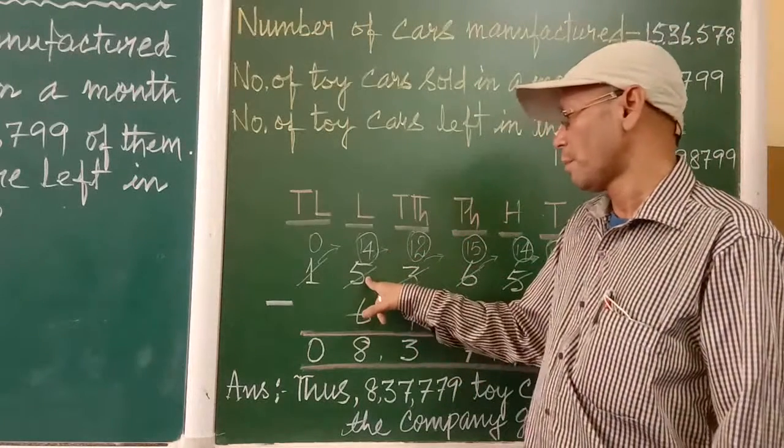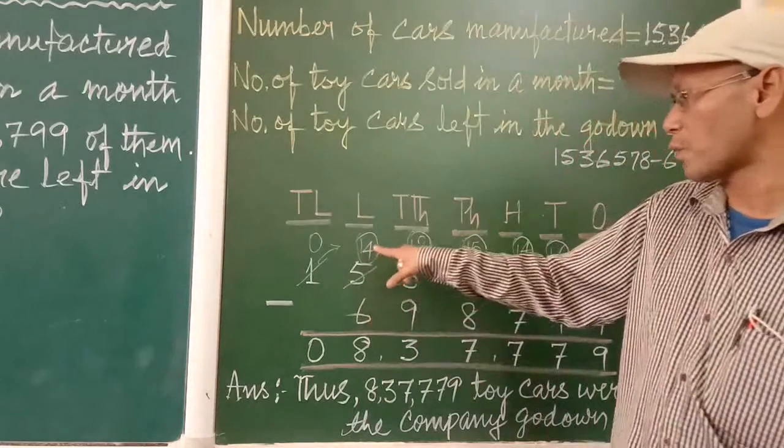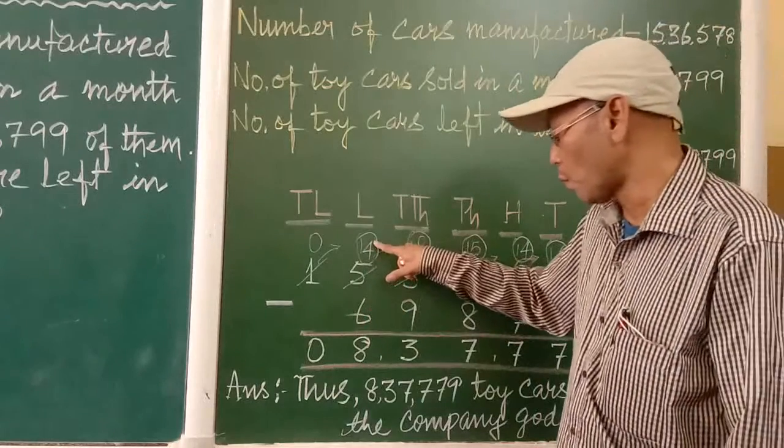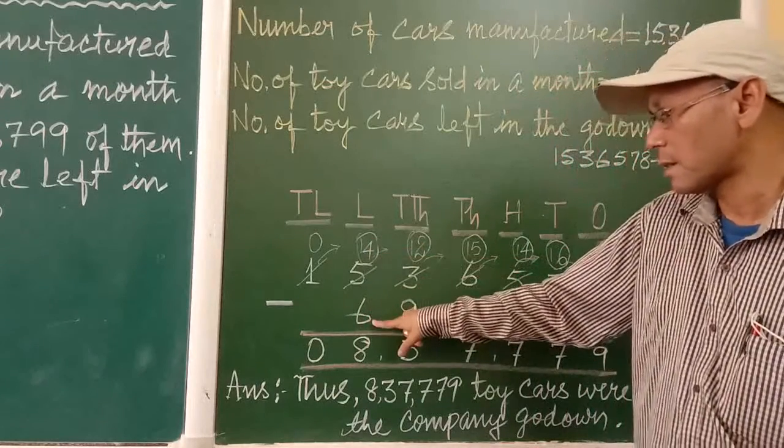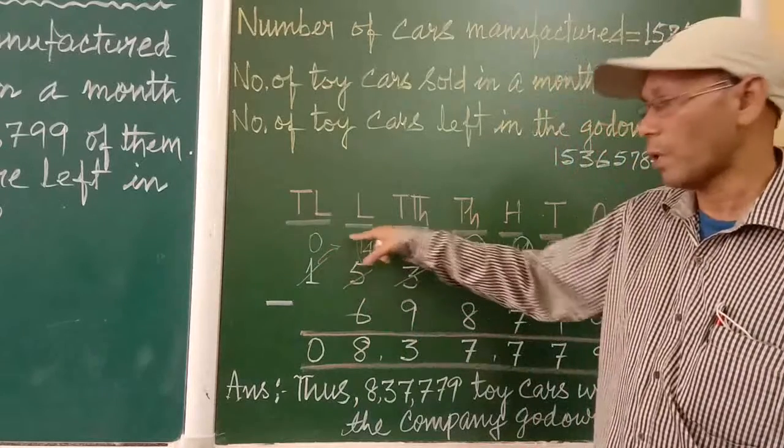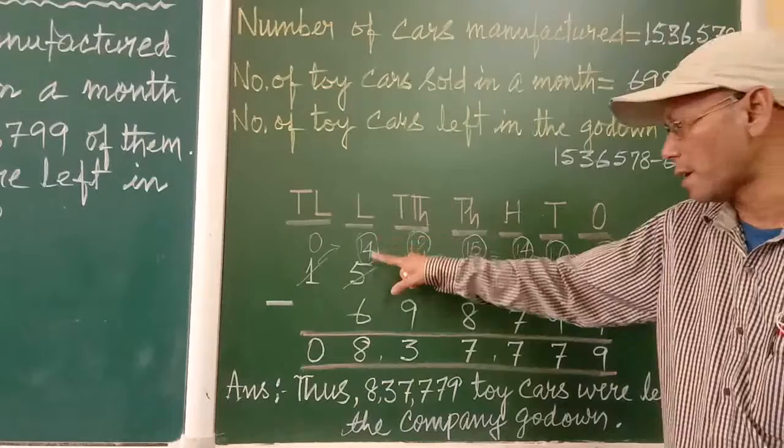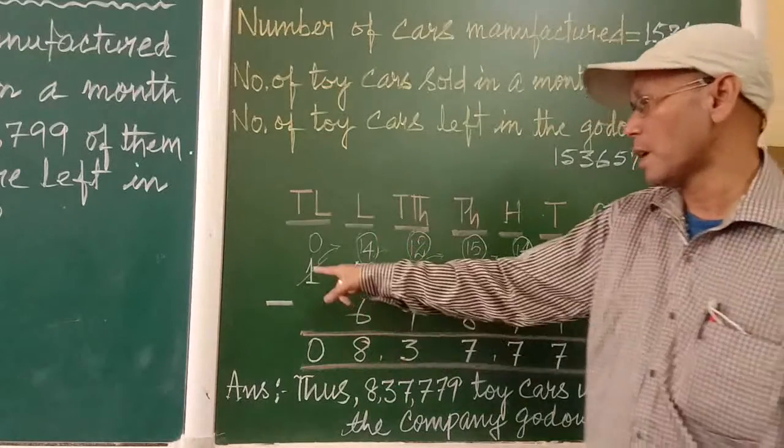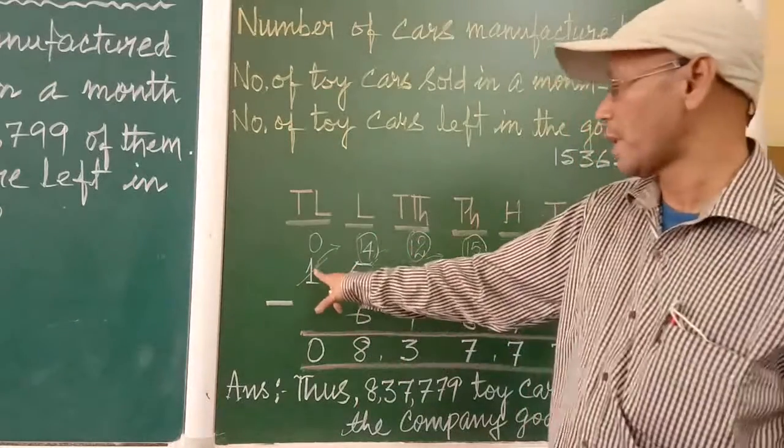Previously it was 5, now it is 4. We have to subtract 6. So again we have to take one from here, we have to borrow one from here. Then it will become 14. 14 minus 6 is 8. Here previously it was 1, we have given 1 here, so now it is 0.